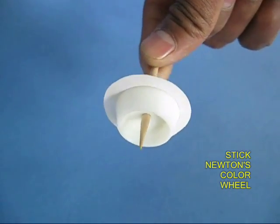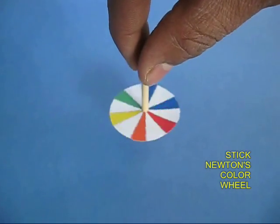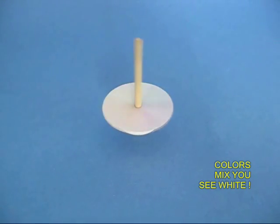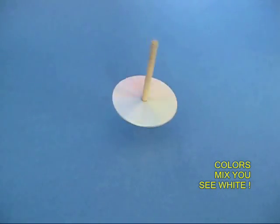And if you spin this, you take a Newton's color disc and spin this and all the seven colors will coalesce and you will see a grayish white.